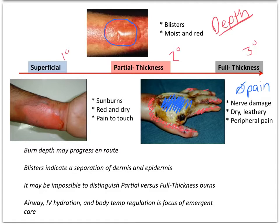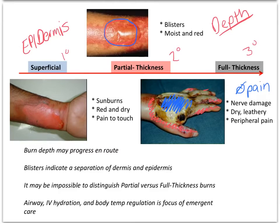Same thing for partial thickness — we may have the exact area where the partial thickness burn is, and then around it could be superficial. Superficial is just going to be painful at the site since it's right there on the epidermis. Partial thickness is in the dermis. Full thickness is below the dermis — in the subcutaneous tissue, also referred to as sub-Q, which includes fat and muscle.